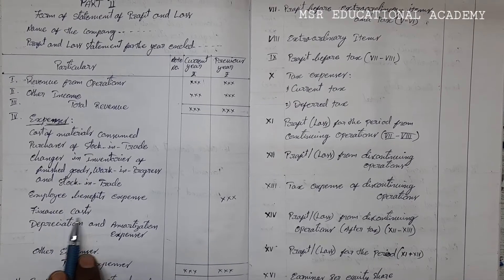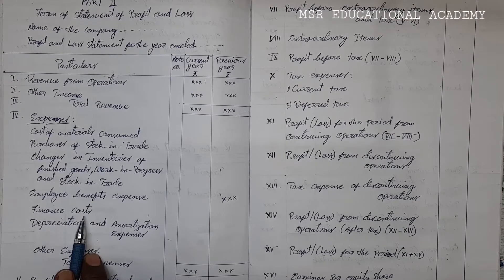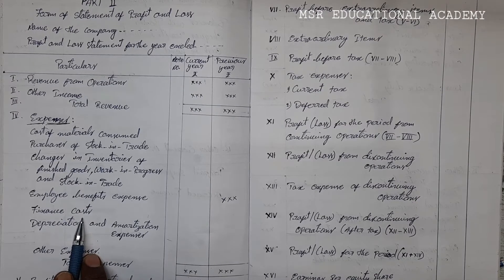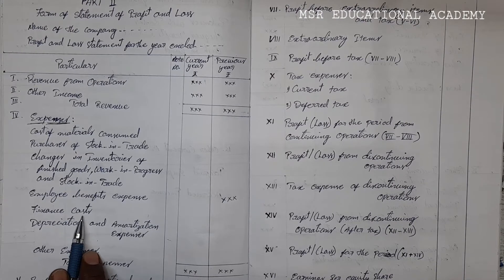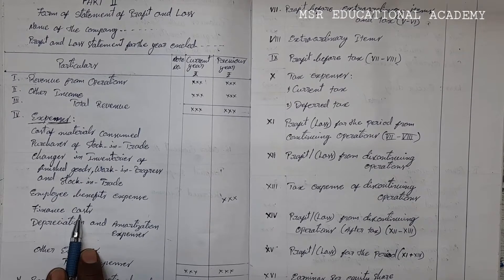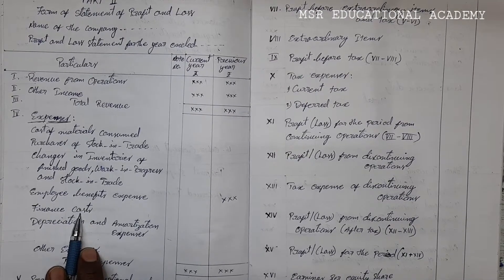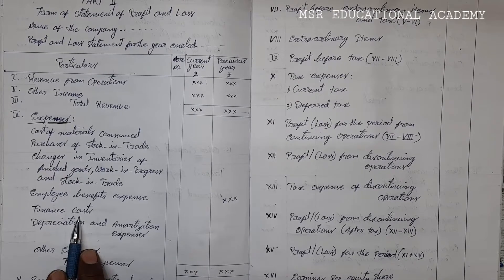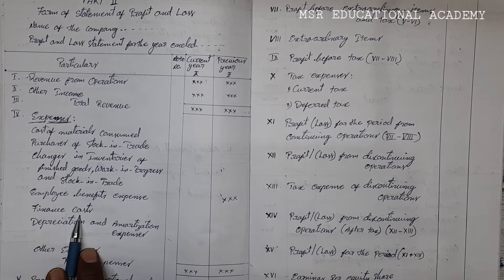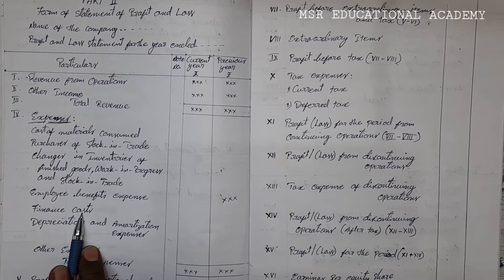Next is finance cost. Finance cost means whatever amount the company has borrowed from financial institutions — on that borrowed amount, the company has to make payment as interest. Every company has to borrow some amount from financial institutions, and on that, every company has to pay interest. That interest expense comes to finance cost.